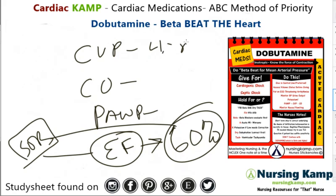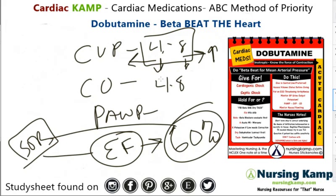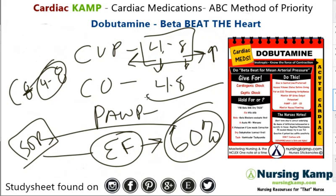CVP is normally four to eight — greater than eight means there's too much fluid on board, and less than four means there's not enough. Cardiac output is four to eight. With dobutamine, we assume the cardiac output is less than four, and that's why they need it — they need to increase their cardiac output. PAWP is eight to twelve — less than eight is not enough fluid, and greater than twelve is too much fluid.